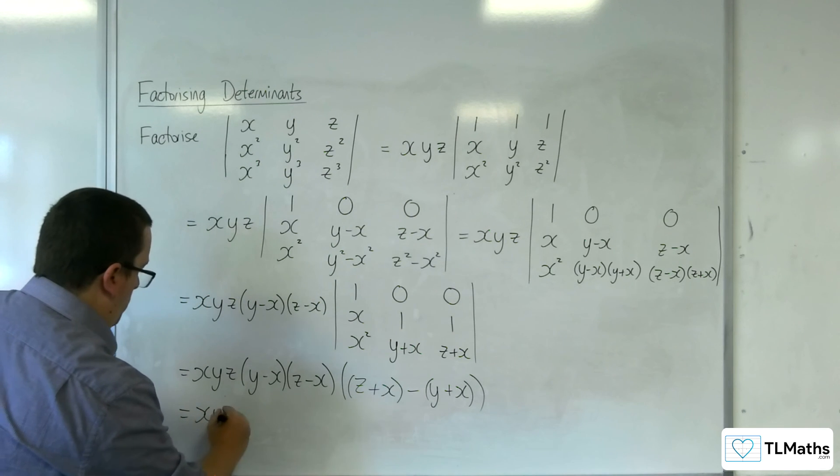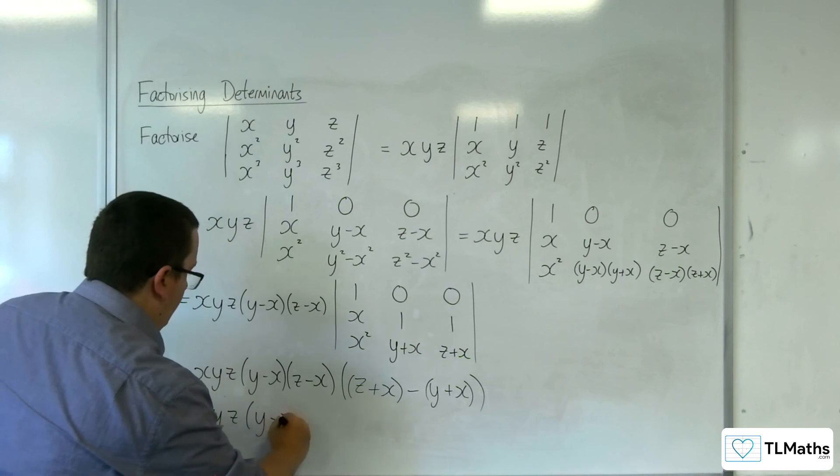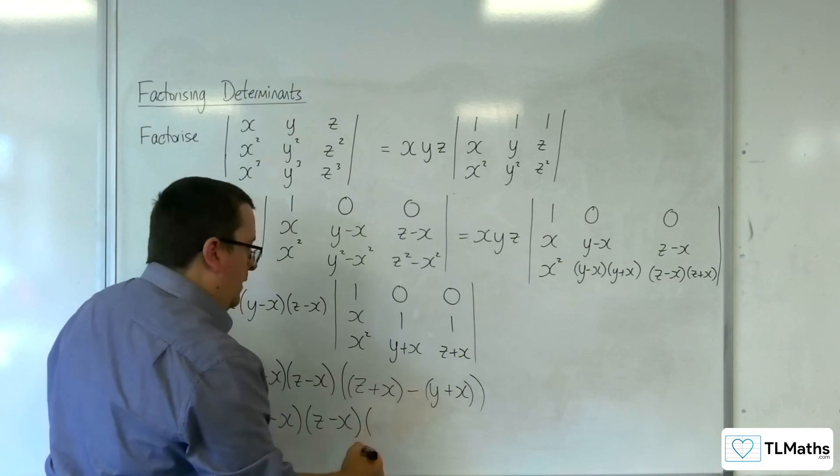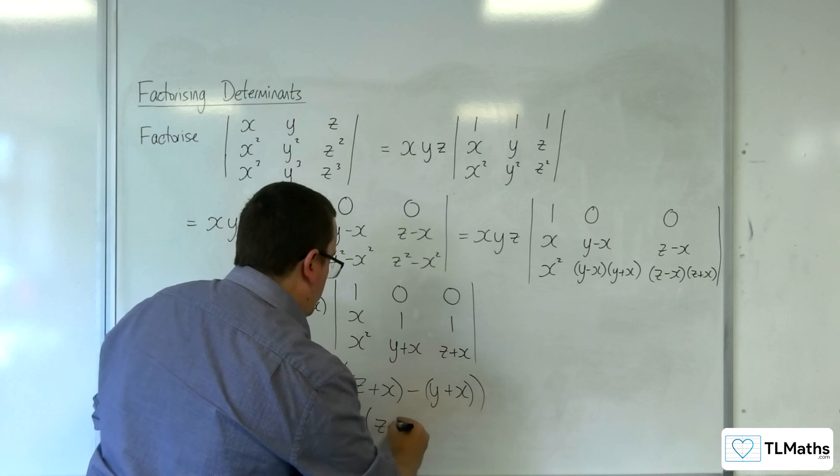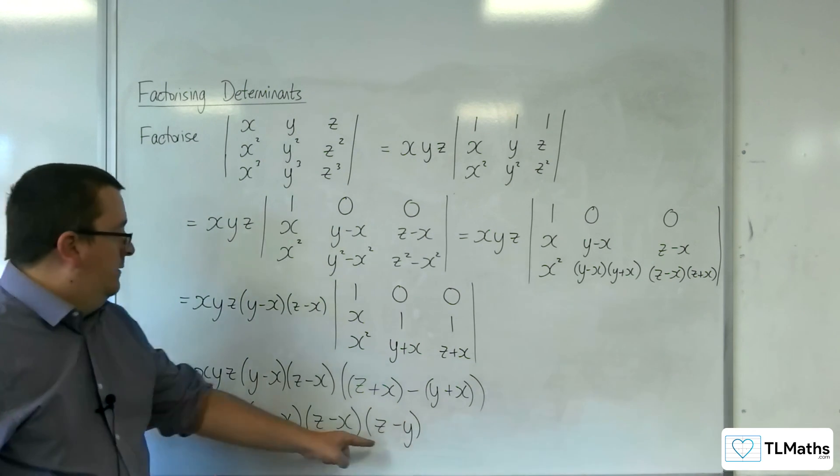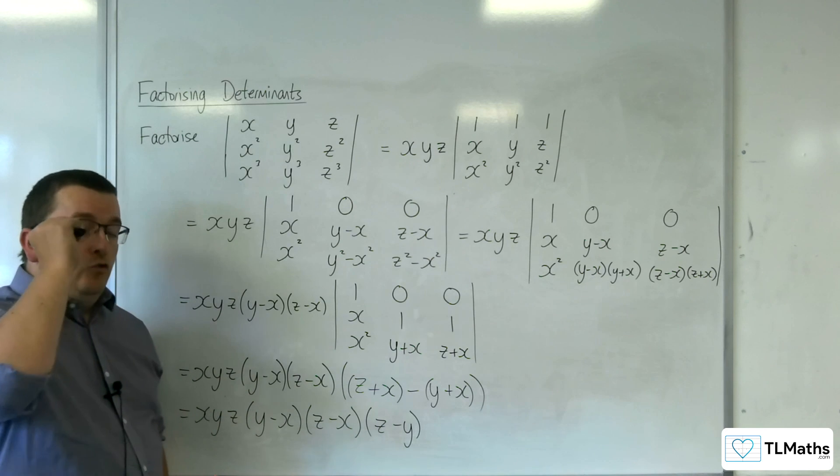So we have x, y, z, y take away x, z take away x, and then z take away y. And so that is now fully factorized.